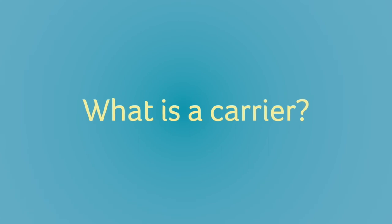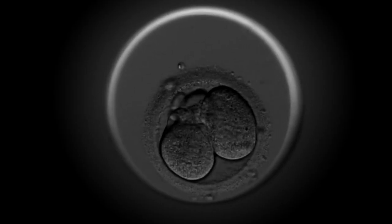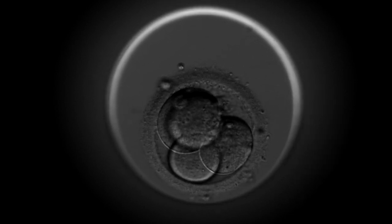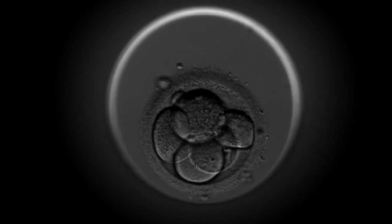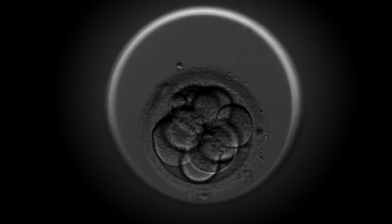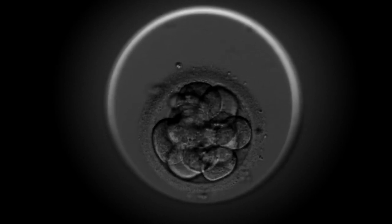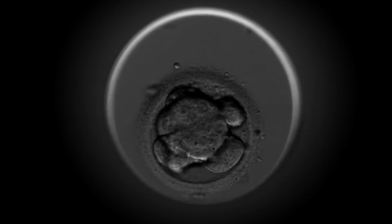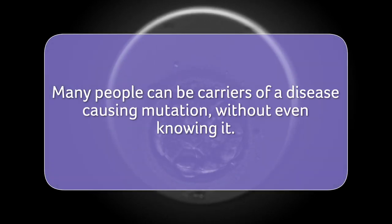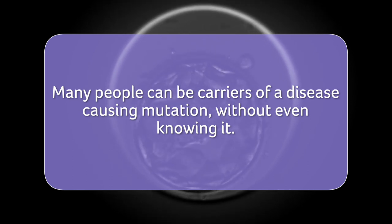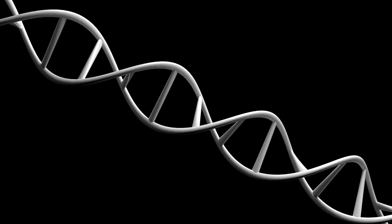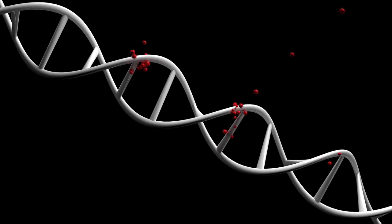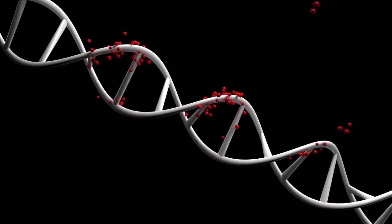What is a carrier? Everyone has two copies of each gene, one from their mom and one from their dad. Being a carrier means that one copy of a gene has a change, called a mutation, which causes it to not work properly. Carriers still have one working copy of the gene, so they typically do not have any health problems associated with carrying a mutation. Therefore, many people can be carriers of a disease-causing mutation without even knowing. Being a carrier, however, means there is an increased chance that your child could be born with a genetic disease.